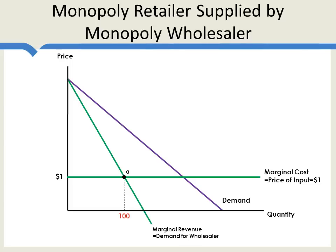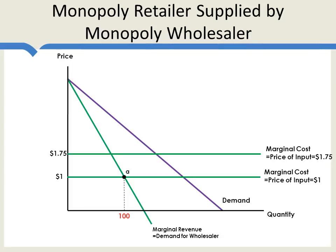What this tells us, from the point of view of the wholesaler, is that if the wholesaler sets a price of $1, it will sell 100 units to the retailer. If the wholesaler sets a price of $1.75, then the retail monopoly will choose the point where marginal revenue equals marginal cost — let's say at a quantity of 80. So if the price is $1.75, the quantity sold is 80. This means that the marginal revenue curve for the retailer is actually the demand curve for the wholesaler — whatever price the wholesaler sets, it tells us the quantity demanded by the retailer.